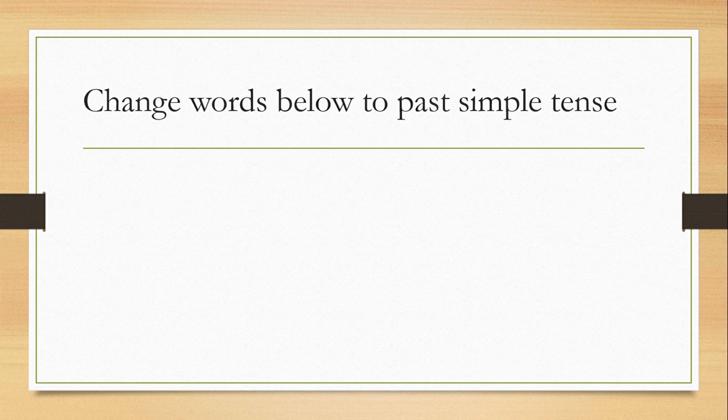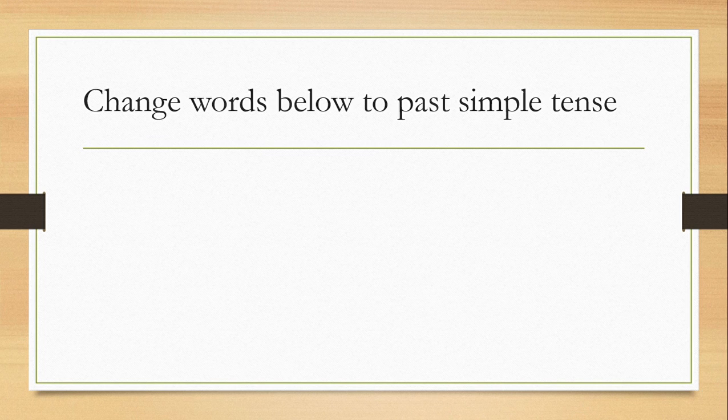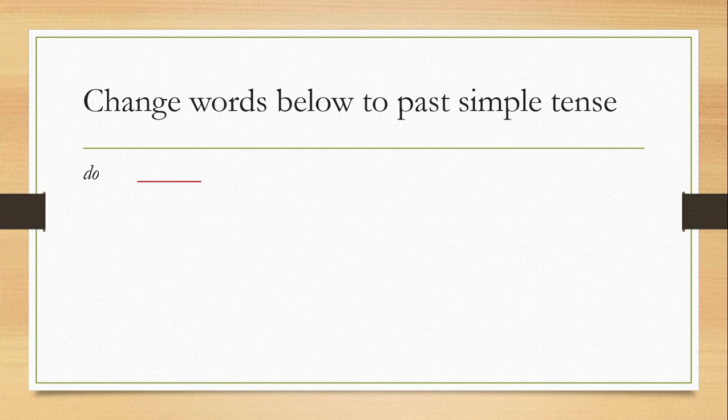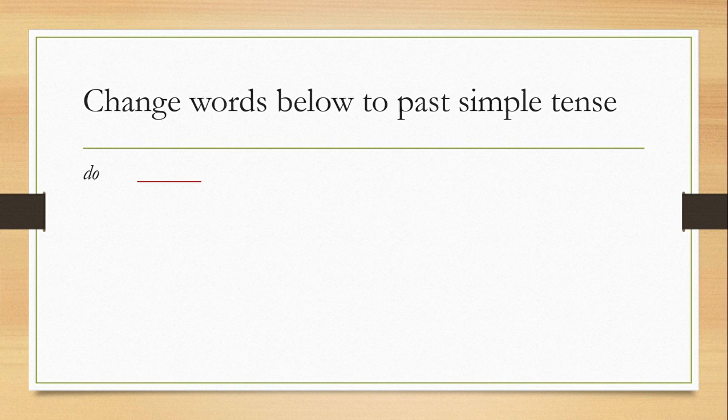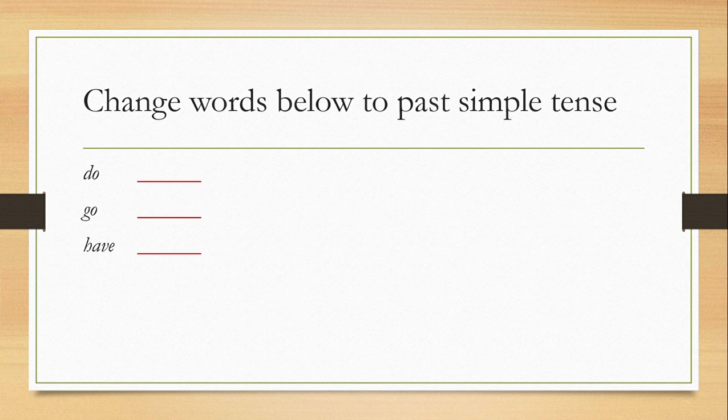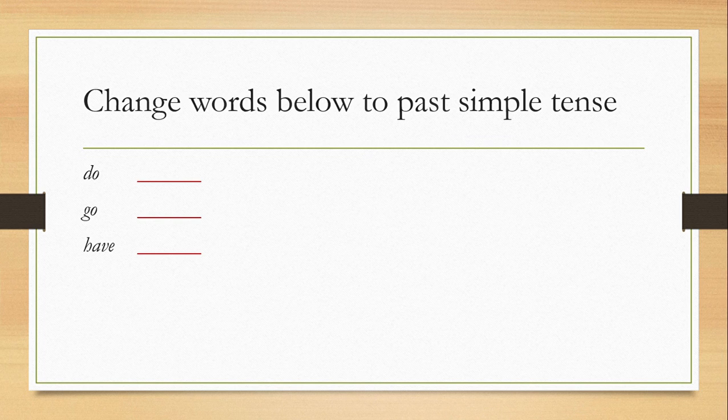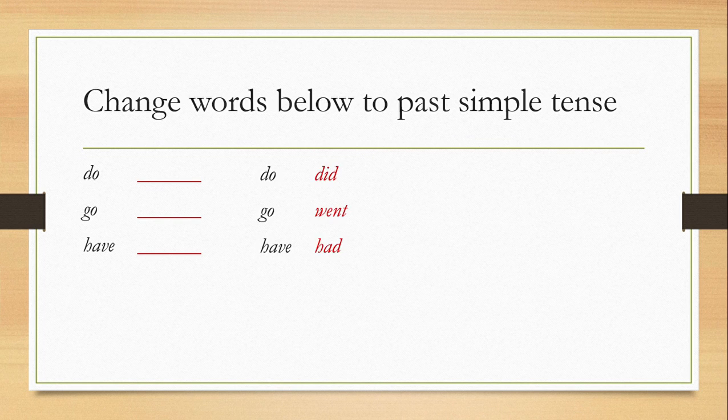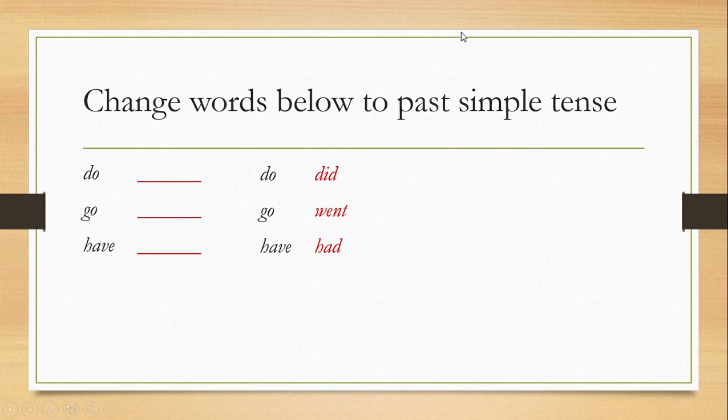Okay, so now I would like you to change words below to past simple tense. Do, so do is the word one. Go and have. I hope that you can change these words into the past simple tense because we already learned about it from last week. And now here is the answer: do changed to did, go changed to went, have changed to had.